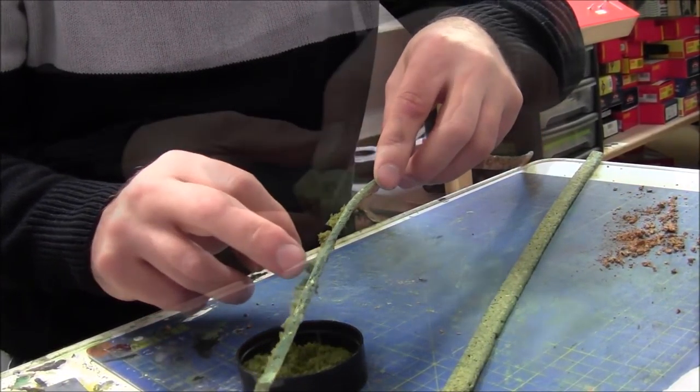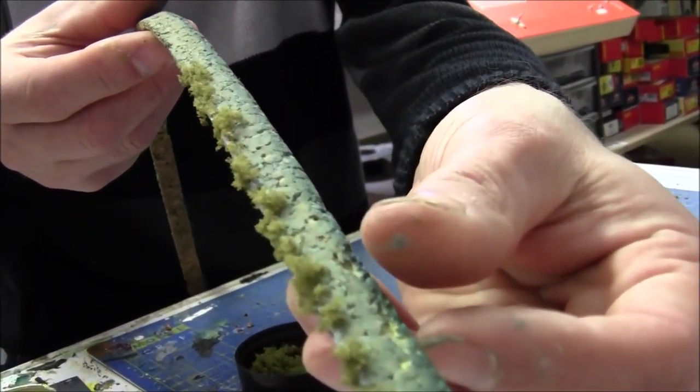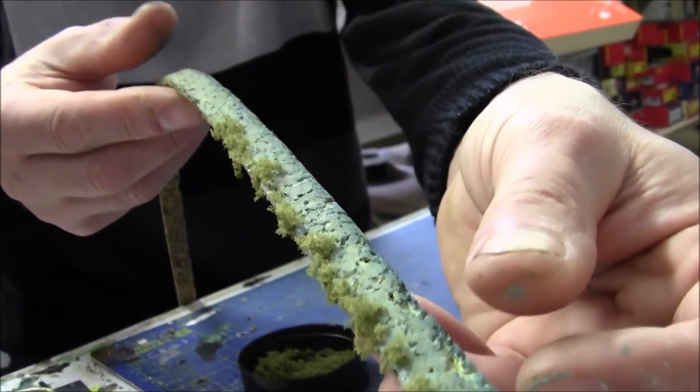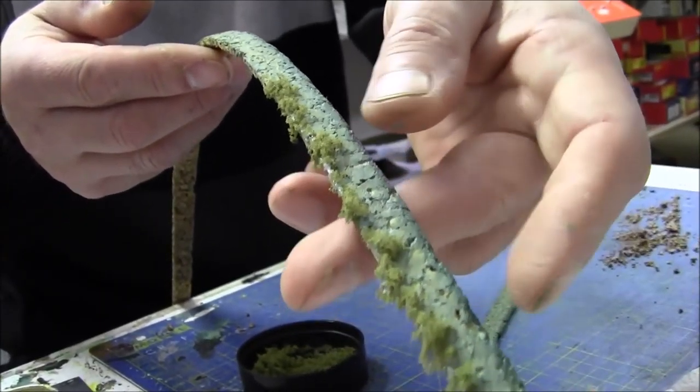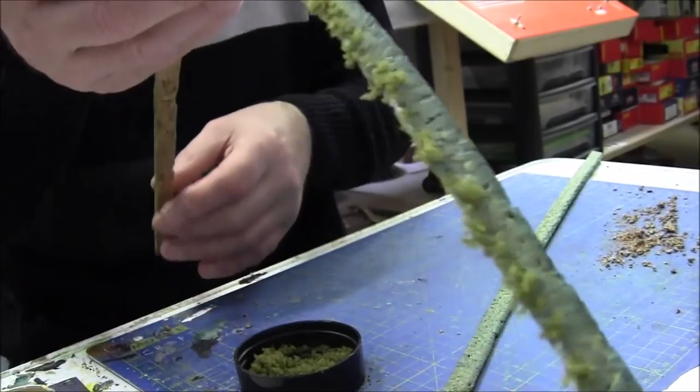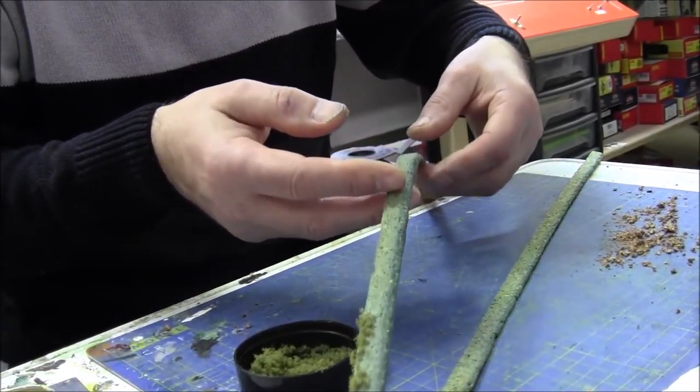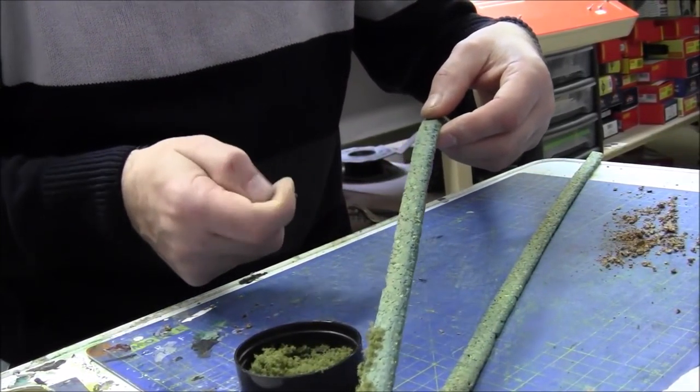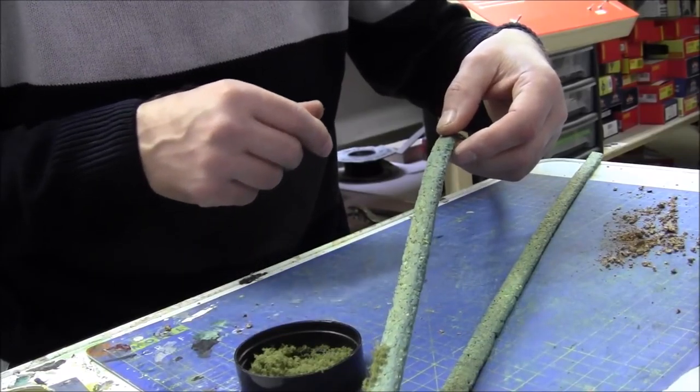Keeping the lid underneath so it catches any loose bits, and just give it a gentle tap so it looks something like that. And then once that's glued onto the back scene, well, I'll just see how it looks. Right, I shall continue this and then get back to you later.